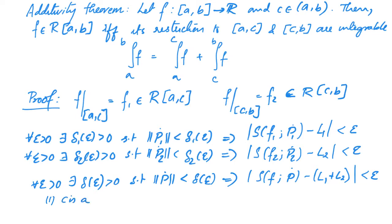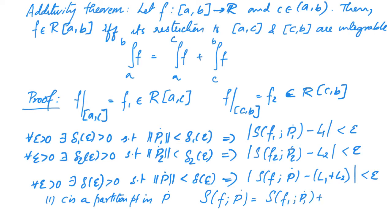The first case is that c is a partition point in P·. If that is the case, then P· can be split into a partition P₁· of [a,c] and P₂· of [c,b], and clearly S(f, P·) = S(f1, P₁·) + S(f2, P₂·). Notice that the norms of P₁· and P₂· are less than or equal to the norm of P·. Because of this, if δ(ε) is less than both δ₁(ε) and δ₂(ε), then S(f1, P₁·) is ε-close to L₁ and S(f2, P₂·) is ε-close to L₂, so S(f, P·) is 2ε-close to L₁ + L₂. As ε is arbitrary, we get our result.